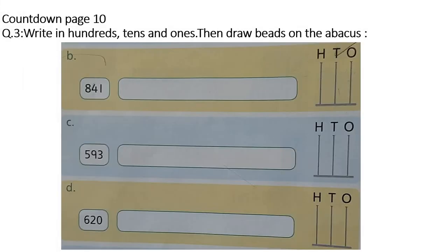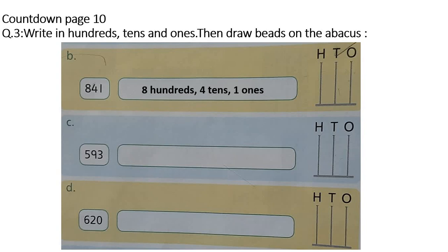This is Countdown page 10. Please open your Countdown page 10. Question number 3 is: write in hundreds, tens, and ones, then draw beads on the abacus. Part B is 841. You will write 800, 4 tens, 1 one. And you will draw beads on this abacus: 8 beads in hundreds column, 4 beads in tens column, and 1 bead in ones column.